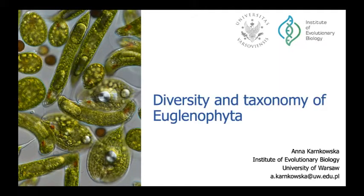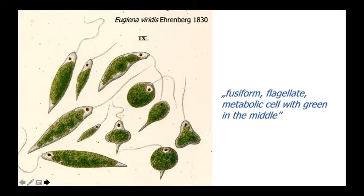As you see on this photo, the euglenophytes are quite beautiful — large cells, relatively easy to see under the light microscope. That is probably why, already very early in the history of science, they were described for the first time by Ehrenberg in 1830, with a pretty basic microscope. What he wrote about the first species and first genus, Oblena, was not very specific — a fusiform flagellate metabolic cell with green in the middle — but it still holds true.